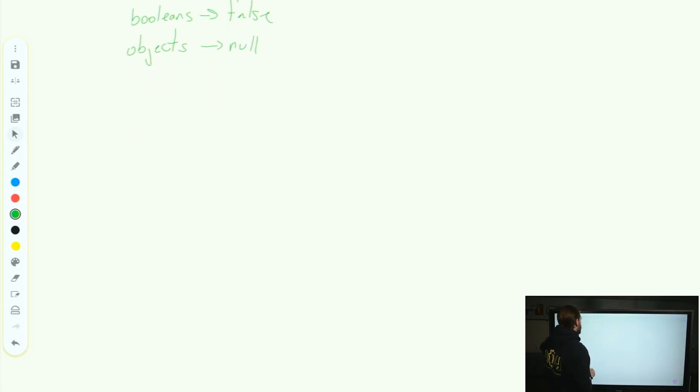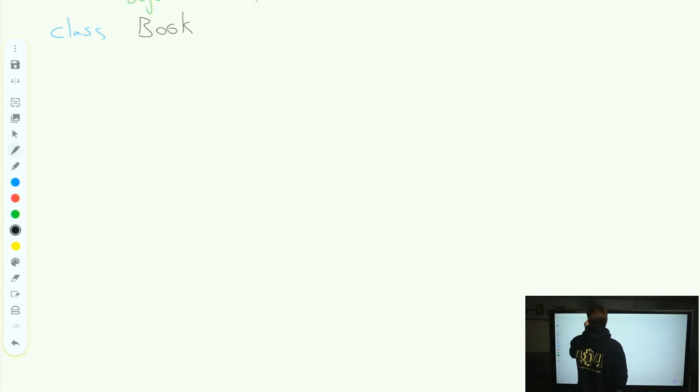Our constructors, just as methods, we can have overloaded constructors. We can call multiple levels of constructors. Let's see how we would do something like that. Let's say that I have a class, and let's go ahead and call this class Book.